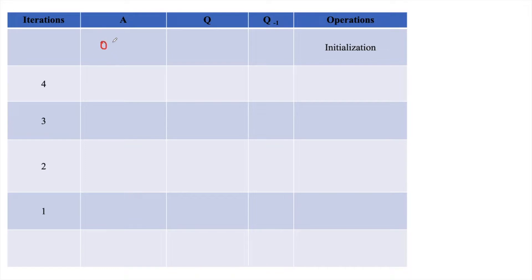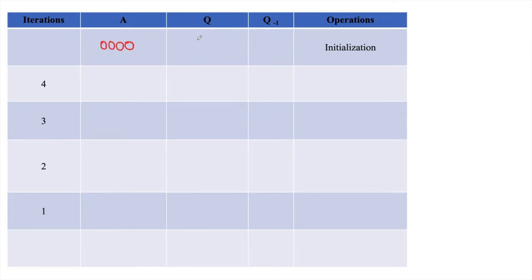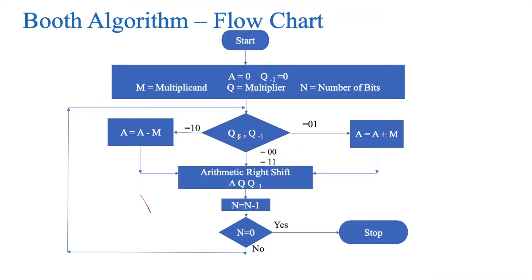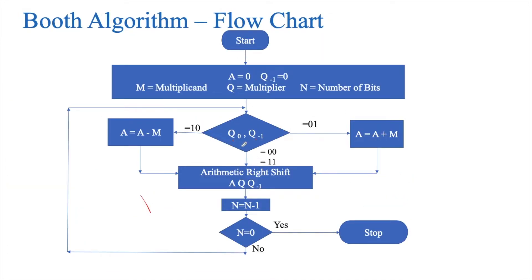So what is A? A is 00000. What is Q? Q is the multiplier, which is 0110, and Q-1 is initialized to 0. We have made all initializations. Now, following the flowchart, we have to check Q0 and Q-1. Q0 is 0 and Q-1 is 0 — both are 0. When both bits are 0, we just perform an arithmetic right shift, reduce N by 1, and proceed with the algorithm.